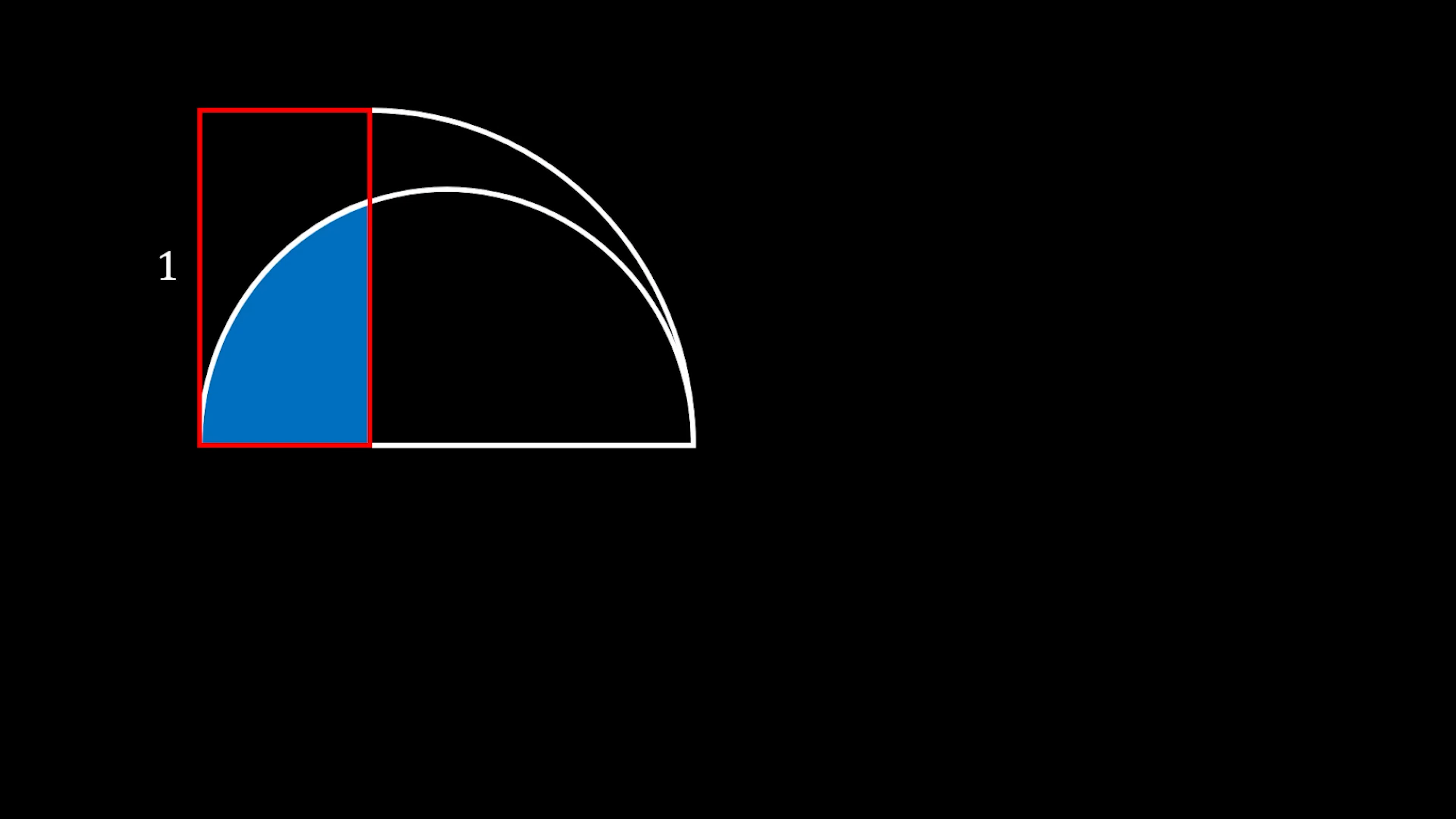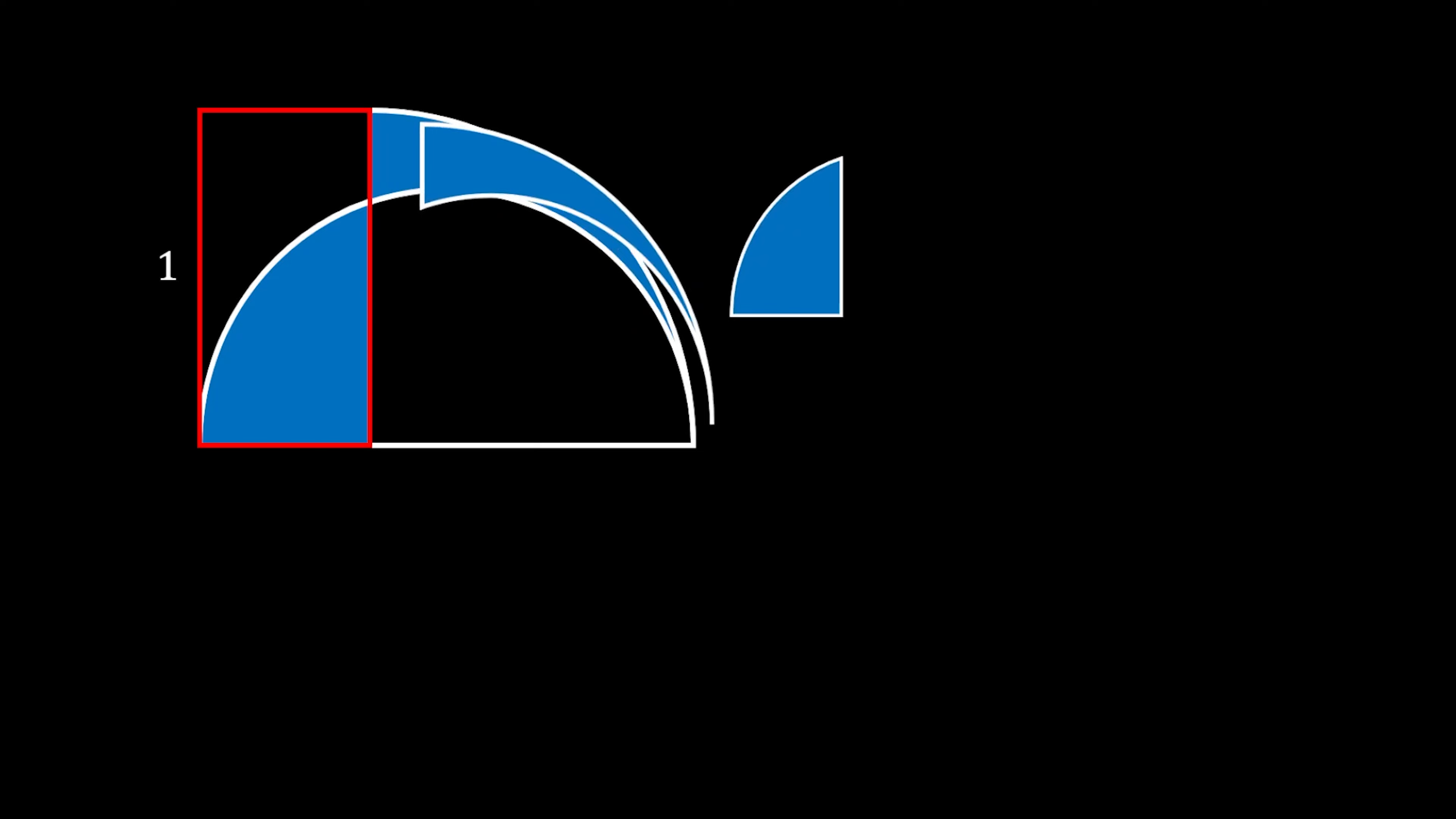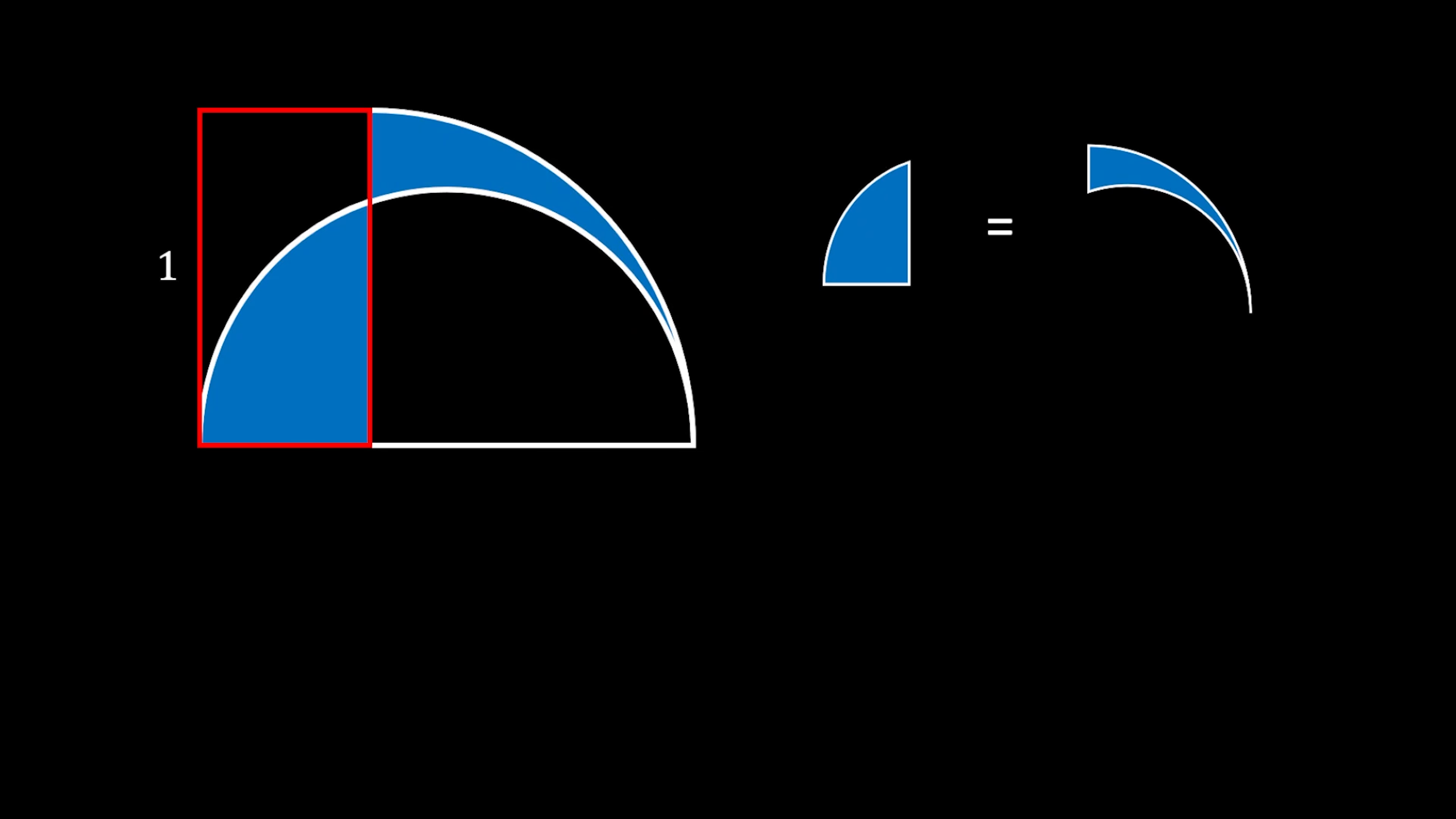Let's start with the red rectangle with the height of 1. From its left side we will construct the quarter circle and from the bottom side we will construct the half circle. We can notice that we have these two blue shaded regions. If we know that the area of these two shaded regions is equal, is it possible to find the area of this red rectangle?